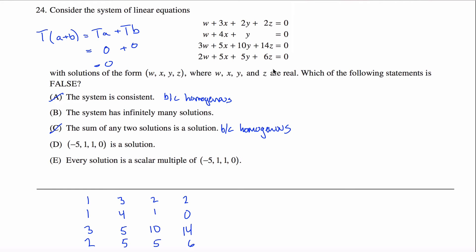So because this is homogeneous, then the sum of any two solutions is a solution. That'll always happen. The minute you saw all these zeros here, you know that that would not be the answer. That would not be false, that's true.